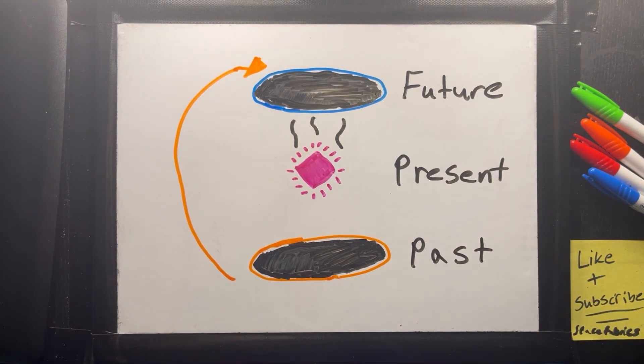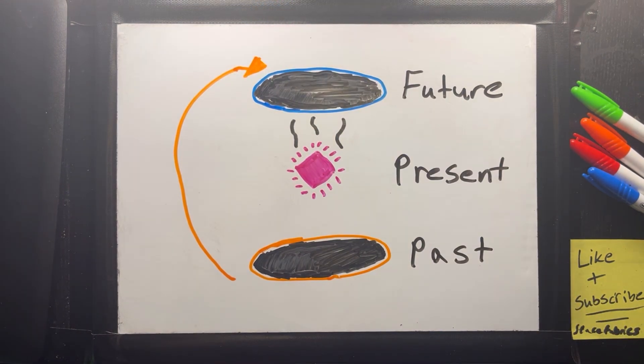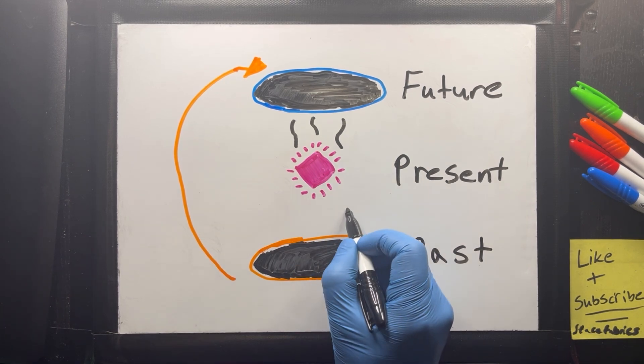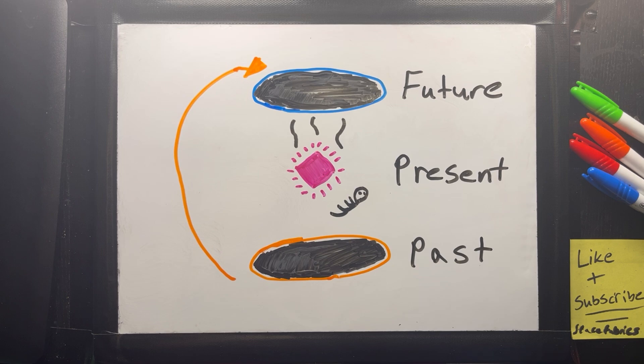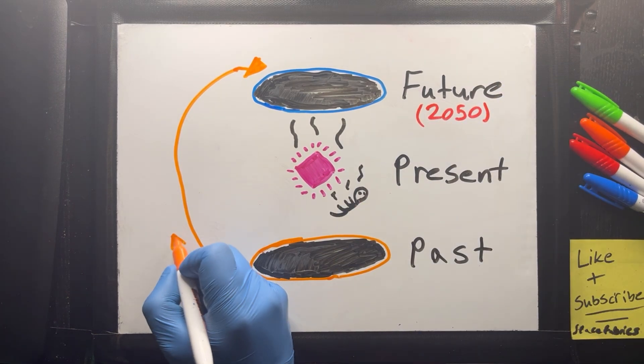In such a way that an event could directly influence its own cause. For example, if a physicist in 2050 builds a time machine using blueprints they discover, and they travel back to 2020 and give the blueprints to their younger self.